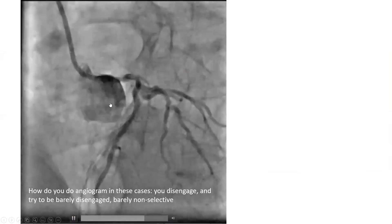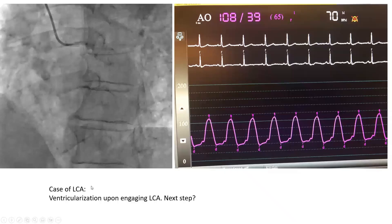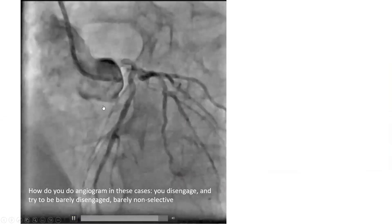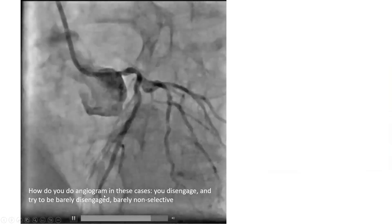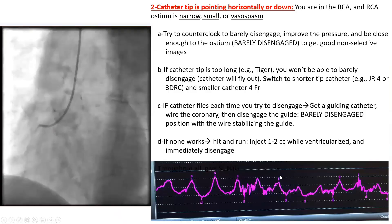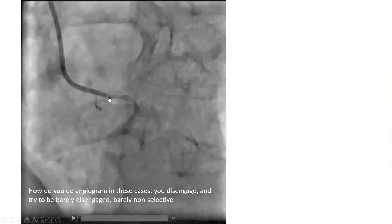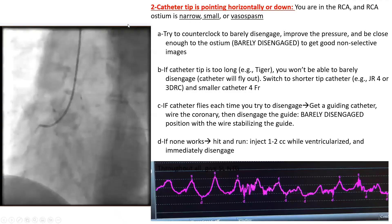This applies for both left and right coronary. In another case where we were ventricularized engaging the left main, we did our angiogram with a good waveform while barely disengaged — you can see we're disengaged here but close enough to see the vessel. Sometimes you try to be barely disengaged but the catheter flies out and you cannot maintain that fine position. What you can do is get a guiding catheter, wire the coronary, then disengage — the coronary wire will stabilize the guide so you can maintain a barely disengaged position.